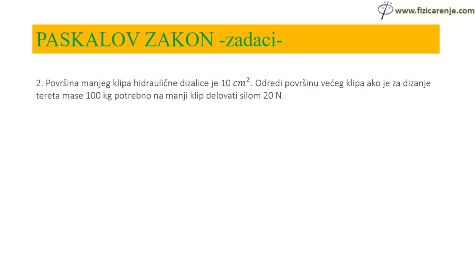Površina manje klipa hidraulične dizalice je 10 cm². Odredi površinu većeg klipa ako je za dizanje tereta mase 100 kg potrebno na manji klip delovati s silom 20 N. S1, to je površina manje klipa, je 10 cm². Na većem klipu se podiže teret mase 100 kg. Sila kojom se deluje na manji klip je 20 N, i tražimo kolika je sila na većem klipu.